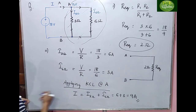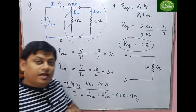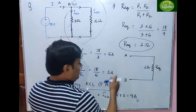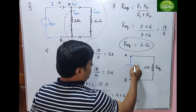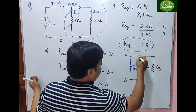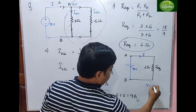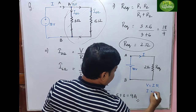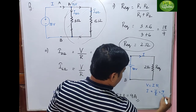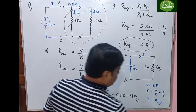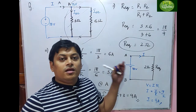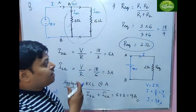Applying KCL at node A, the total current I = I_3Ω + I_6Ω = 6 + 3 = 9 ampere. This is the third bit. Alternatively, using the equivalent resistance: V = I × R_eq, so I = V/R_eq = 18/2 = 9 ampere. In this way we can solve problems on the parallel connection of resistors.